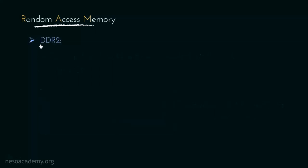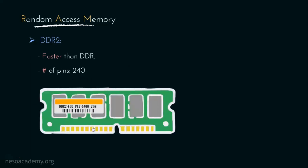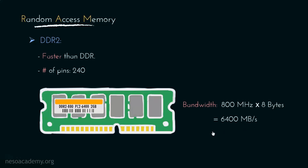The next type is DDR2. Basically it is faster than DDR, meaning higher bus speed, and it has a total of 240 pins. Consider this DDR2 RAM — we can figure out its bandwidth from its label. It has a clock speed of 800 MHz, and the data path is the same as DDR, that is 8 bytes, which gives us a total bandwidth of 6400 Mbps. Notice that its bandwidth is also mentioned in the label as PC2-6400, where the 2 is for DDR2.